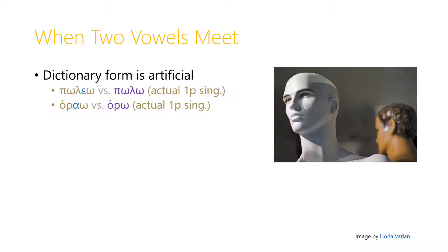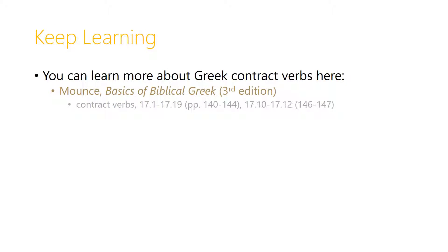One thing you have to realize with contract verbs is that the dictionary form of the verb is artificial. When you learn the verb poleo, unlike with most verbs, you're not really learning the actual first-person singular form. When I say 'I sell,' I don't say poleo — I say polo. And when I say 'I see,' I don't say horao — I say horo. Why do we use these artificial dictionary forms? Just to remind ourselves that these are contract verbs and remind ourselves what the contracting short vowel is, so we'll be able to work out the right endings. You can learn more about Greek contract verbs in Mounce's Basics of Biblical Greek; I've provided the section and page numbers to the third edition.